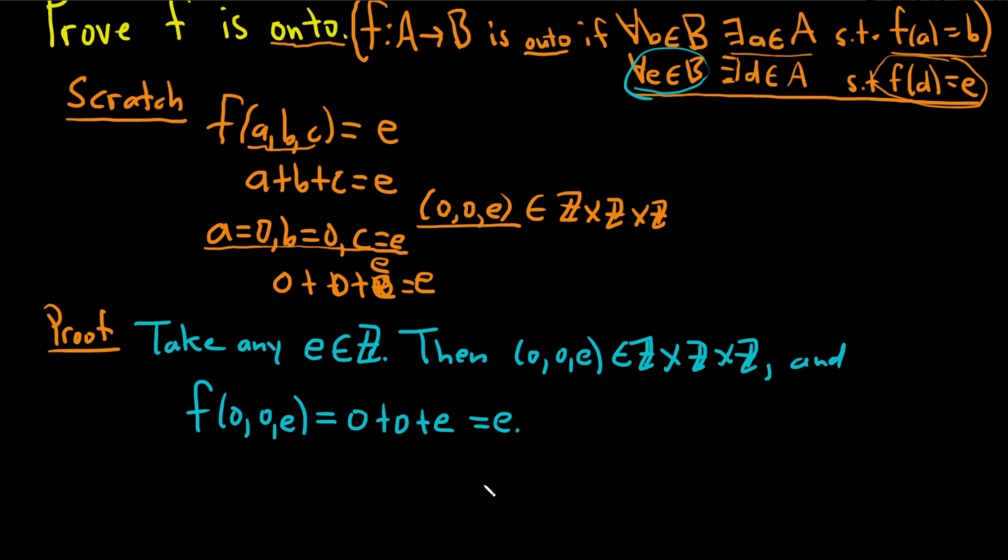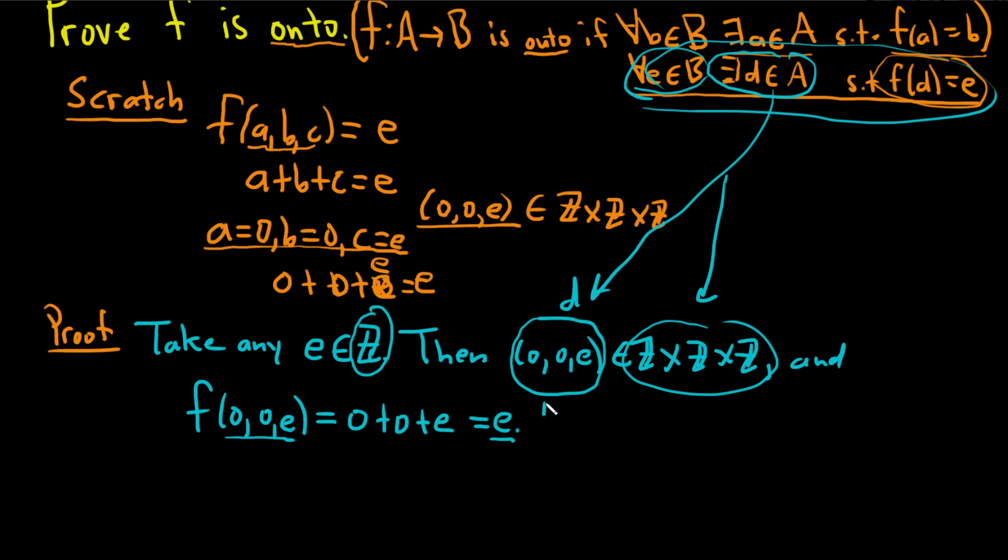So we've done it, right? We took an element in B. We showed the existence of an element in A, such that F of that element is equal to E, and that satisfies the definition of onto, right? This is our D in our revised definition. You see, this is the existence part that we've shown. So that completes the proof.